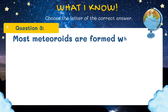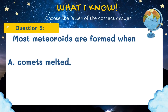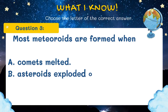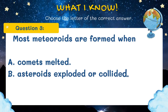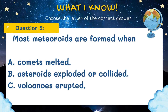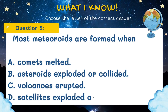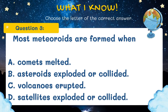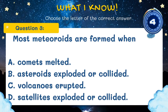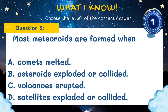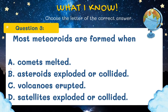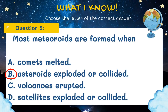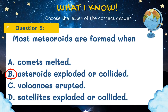Question number three: Most meteoroids are formed when A. Comets melted, B. Asteroids exploded or collided, C. Volcanoes erupted, or D. Satellites exploded or collided. And the answer is letter B, Asteroids exploded or collided.